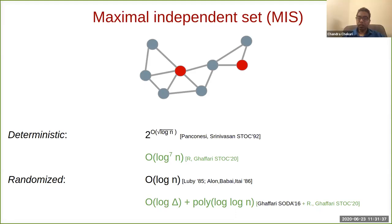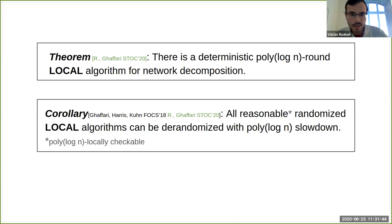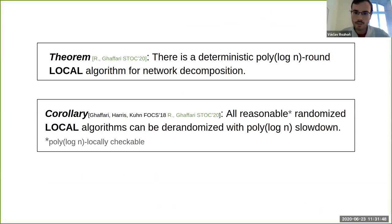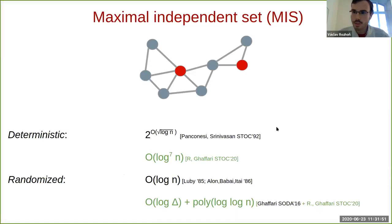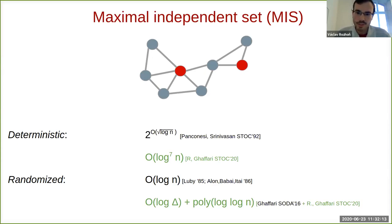Quick question: was the network decomposition problem known before? Network decomposition is actually a very classical problem. The 2^(√log n) upper bound for maximal independent set by Panconesi and Srinivasan is actually an algorithm for network decomposition — that was still the best known way to deterministically solve MIS. Network decomposition was defined in the seminal work of Awerbuch et al., where they gave almost the same round complexity algorithm.